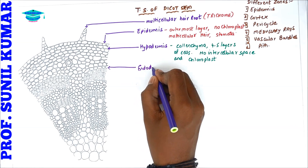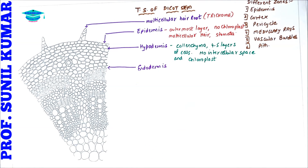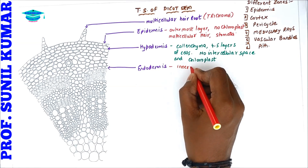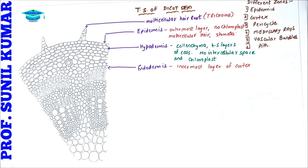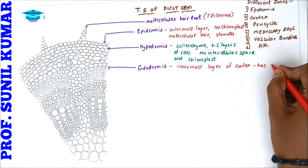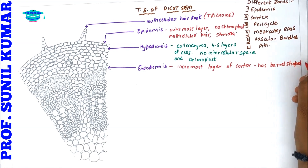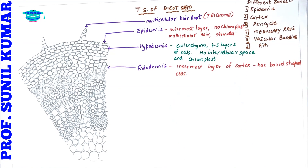Below the hypodermis is the cortex region, and below the cortex is the endodermis. The endodermis is the innermost layer of the cortex, and it has barrel-shaped cells.